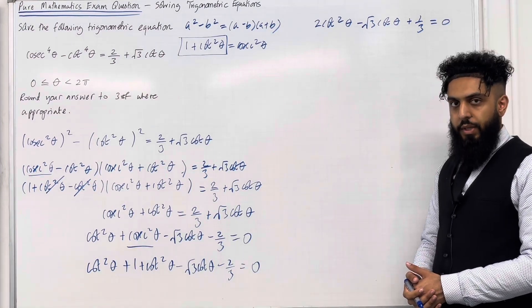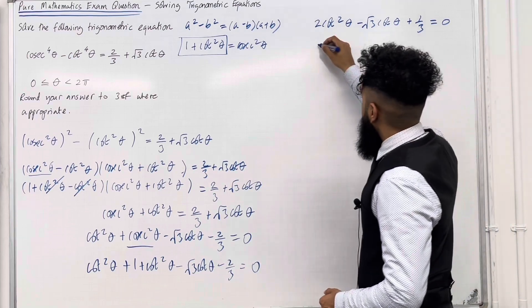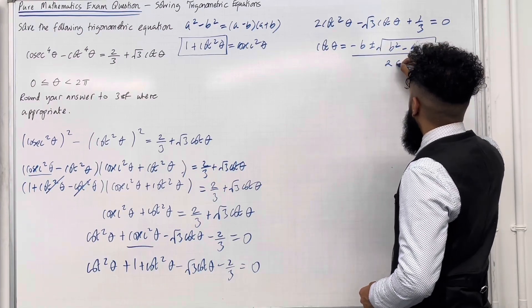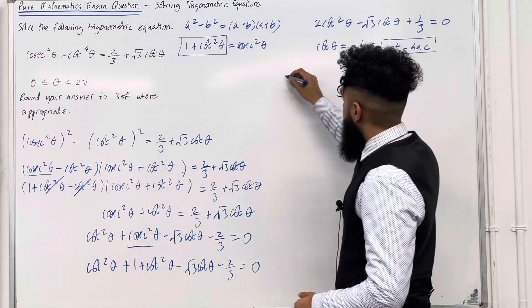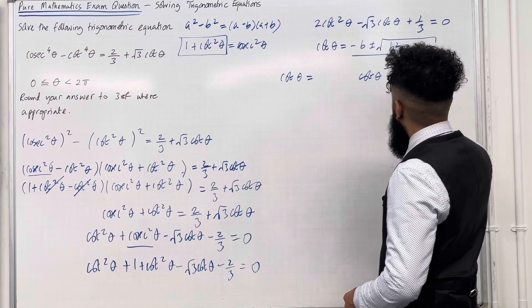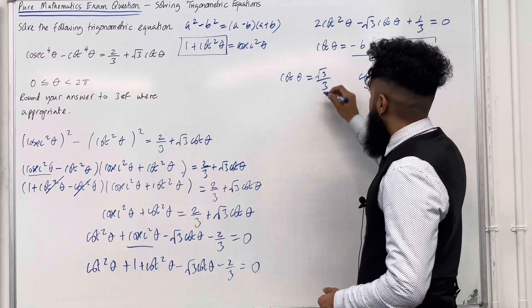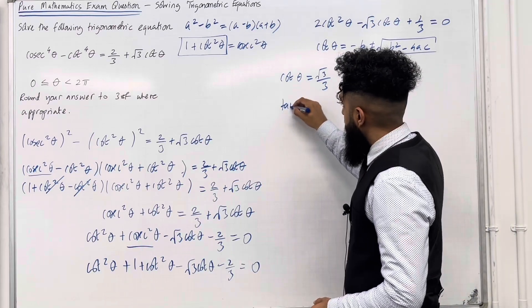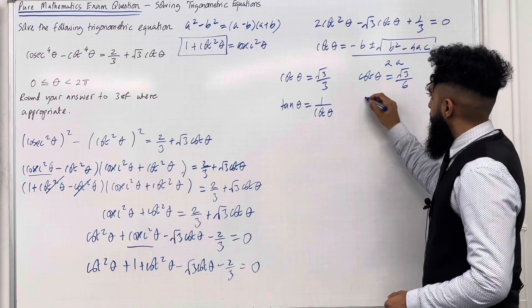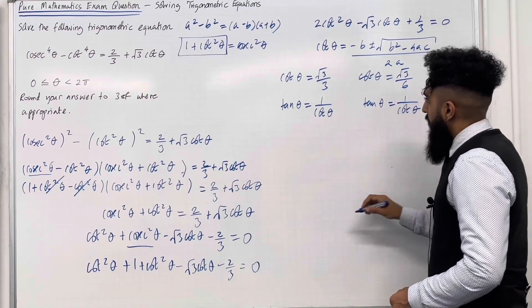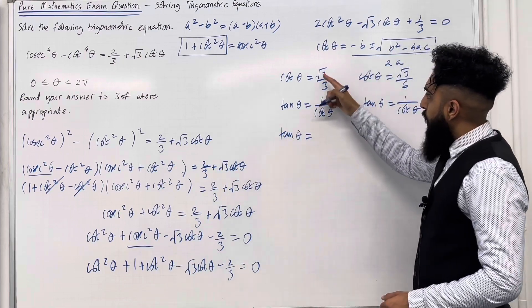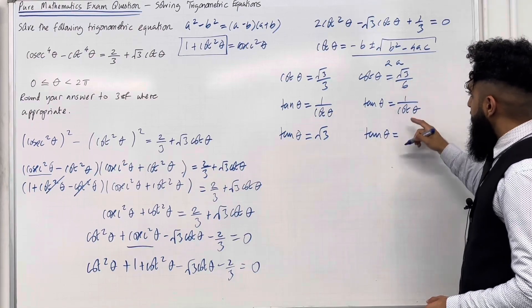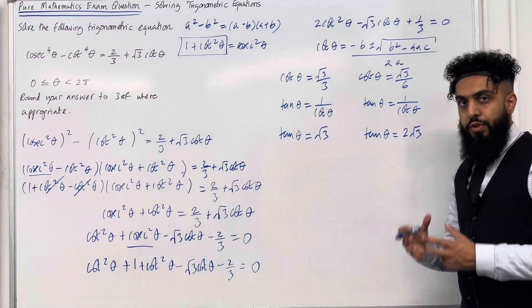We now have a quadratic trigonometric equation. Solving using the quadratic formula — cot theta equals minus b plus or minus square root of b squared minus 4ac, all over 2a — gives two solutions: cot theta equals square root 3 over 3, and cot theta equals square root 3 over 6. Since cot theta equals 1 over tan theta, the corresponding tan values are: tan theta equals square root 3, and tan theta equals 2 square root 3.